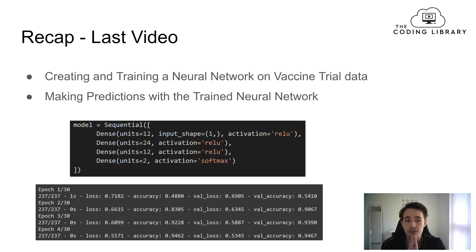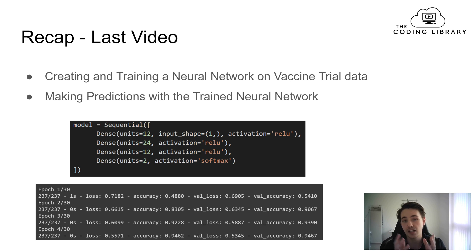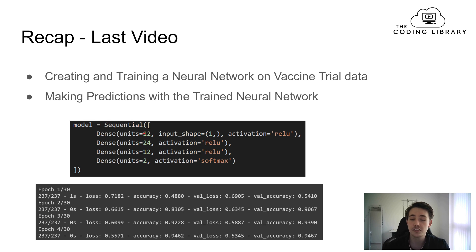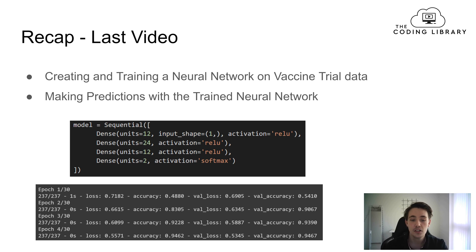First of all, we're going to have a short recap from the last video. If you haven't seen that video, make sure to go watch it where we created our own neural network and trained it on some vaccine trial data, trying to make some predictions. We created this sequential model with two hidden layers, an input layer, and an output layer, and made predictions about whether patients had side effects or no side effects.